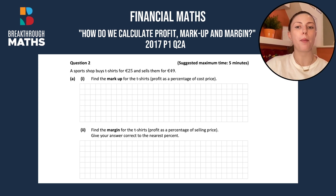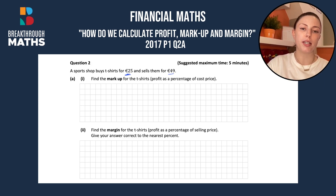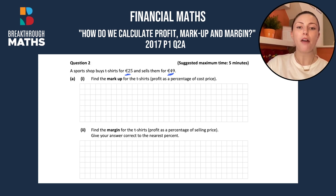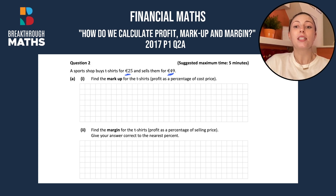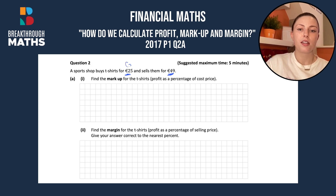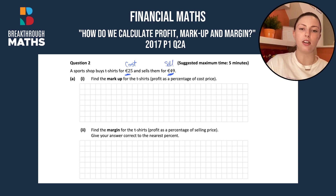We're told a sports shop buys t-shirts for €25 and sells them for €49. So €25 is the cost price to the sports shop, and €49 is their selling price.